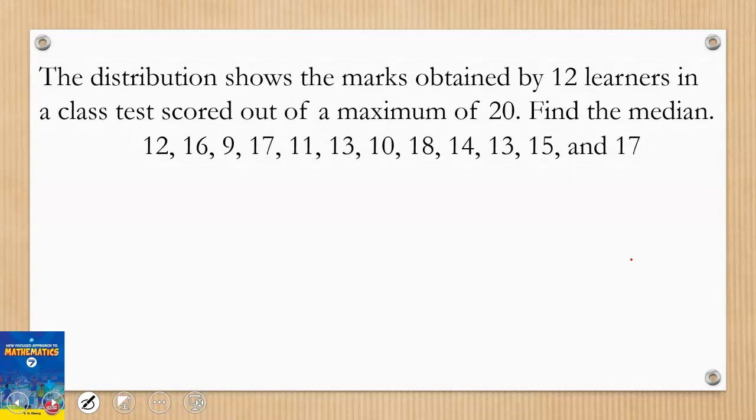Once again, you can arrange this data in order of magnitude, whether descending or ascending. I have done this in ascending order. Remember, if you go by descending you get the same answer. So how do we get the middle? Let me do the inspection: one, two, three, four, five. Let me come from here: one, two, three, four, five. Then I can see that these two numbers are in the middle.